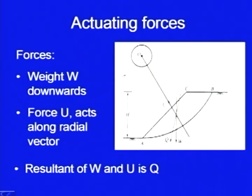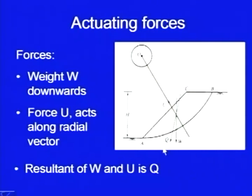Then we discussed about the actuating forces. We take up this wedge which is having a cylindrical surface — the sliding surface is cylindrical — and weight W is acting in the downward direction. The pressure due to water will be acting in the radial direction and we took up the resultant of these two forces, the resultant of W and U. Let us say that is Q, so Q is acting in this direction. So for the actuating forces we took Q; we can find out the area of this wedge and then find out the weight, the center of gravity, and also the water pressure acting, so Q is the resultant.